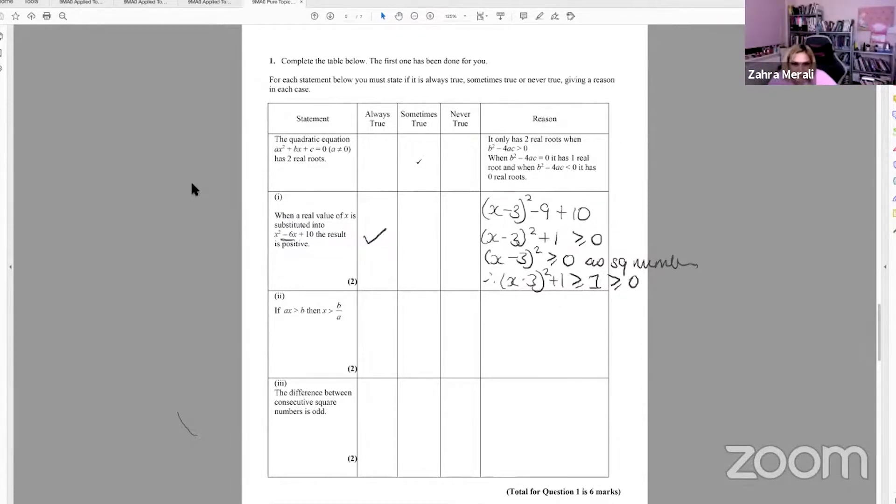And then we've got if ax is greater than b, then x is greater than b over a. Now, you could pick some numbers and think about it. So say, okay, if a is a positive number, then yeah, when I divide it, it works fine. But if a is greater than zero, then x is greater than b over a. But if a is less than zero, when you divide by a negative number, you flip the sign. So actually, you're going to end up with x is less than b over a. So therefore, it's sometimes true.